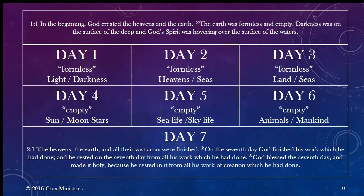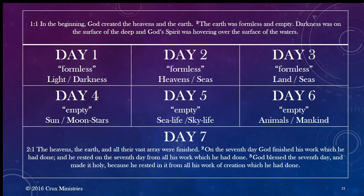The first three days God takes care of the formless aspect by dividing light from darkness, heaven from seas — by heaven I mean sky — and day three, the land from the sea, giving form to creation. Then days four, five, and six take care of the empty or void by filling it with the sun, moon, stars, sea life, sky life, and then animals and mankind. A pattern emerges here that is key to understanding any Hebrew book, including the Old Testament and most of the New Testament.